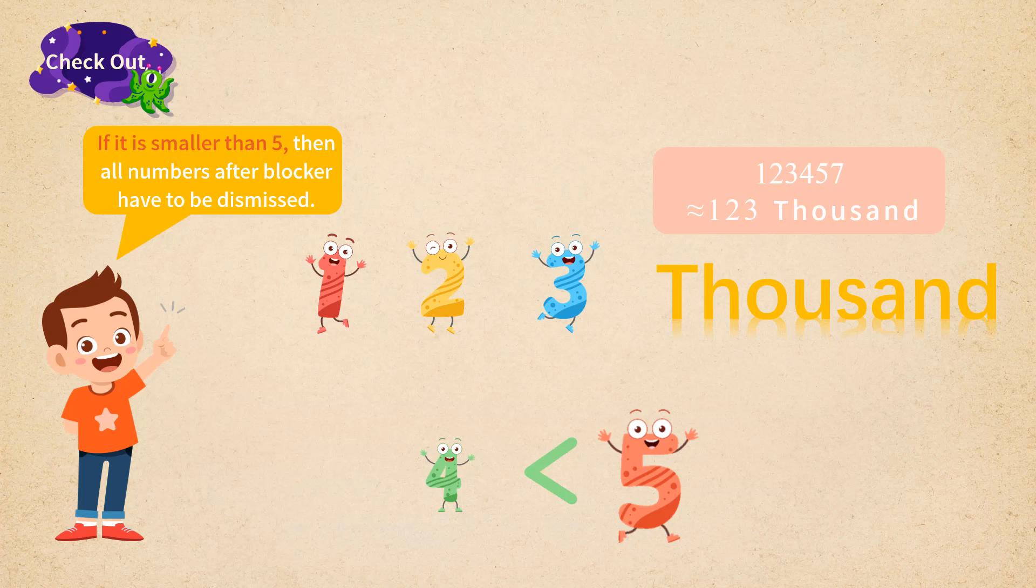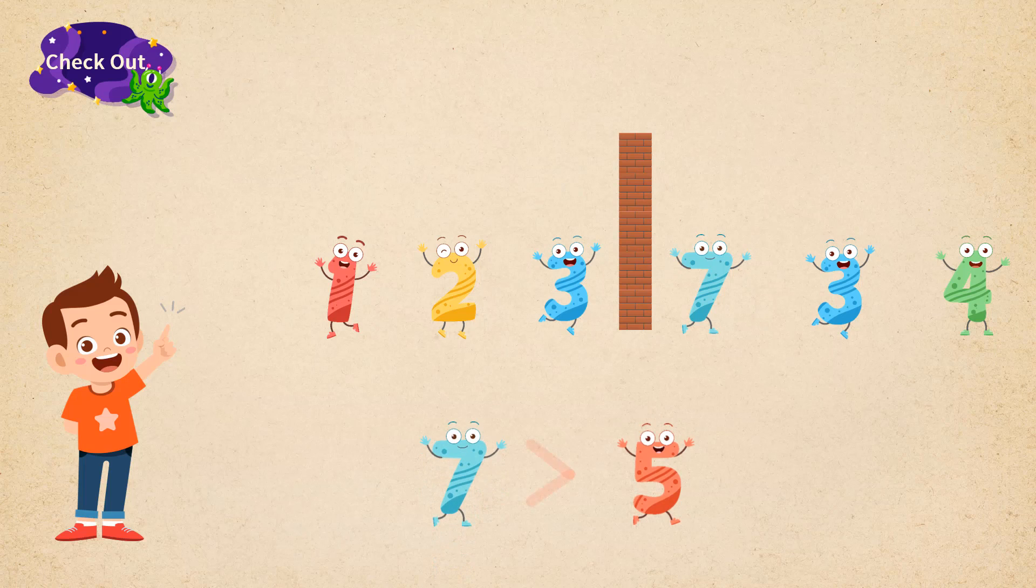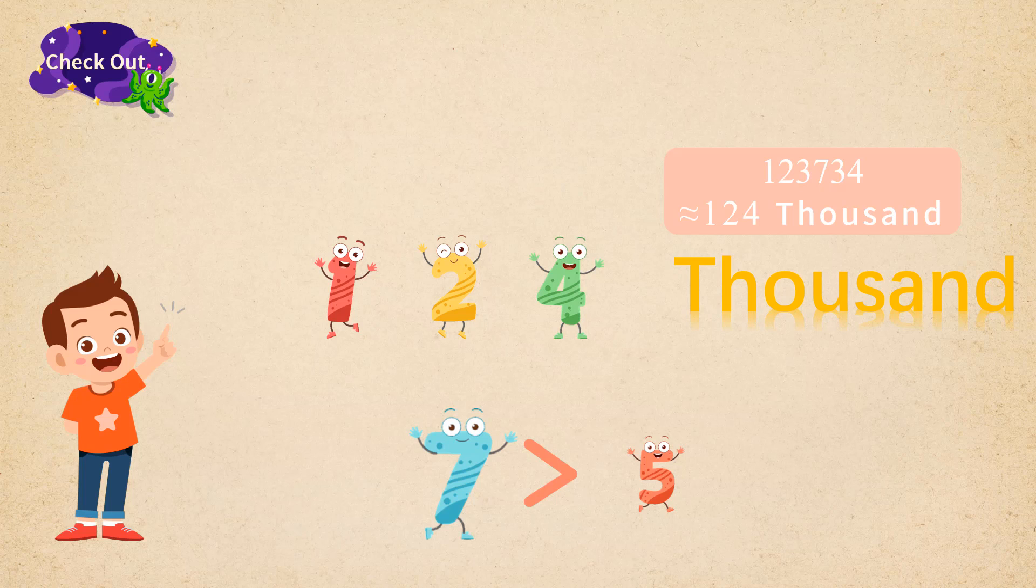If the first number after the blocker is bigger than or equal to 5, then congratulations! The number to the left of the blocker is awarded with an additional 1, though the numbers behind still need to be dismissed. For example, the number 123,734 is rounded to the nearest thousand as 124,000. To summarize,